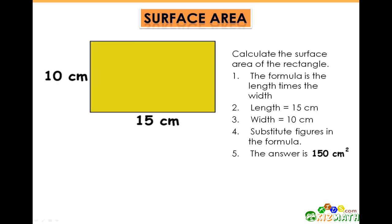Let's look at the surface area of a rectangle. The formula for the surface area of a rectangle is length times width. In this example, the length equals 15 centimeters and the width equals 10 centimeters.